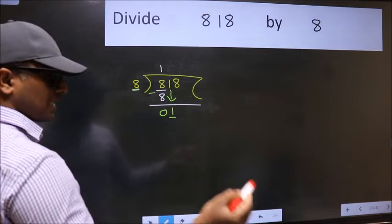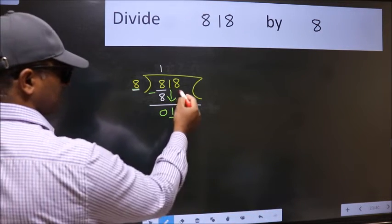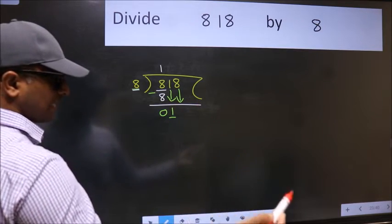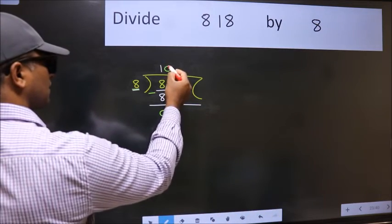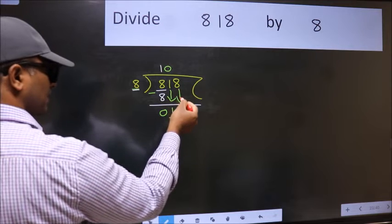So, we should bring down the second number. And the rule to bring down the second number is put 0 here. Then only we can bring this number down.